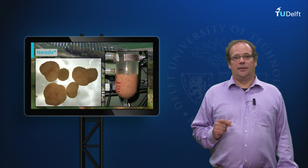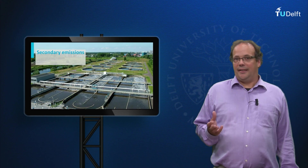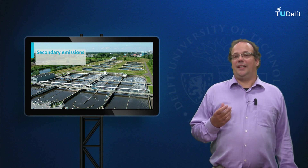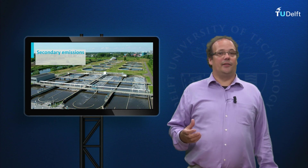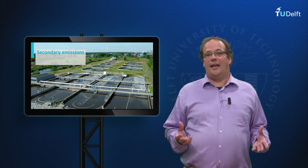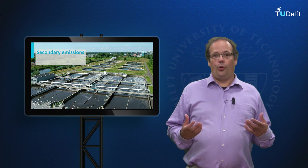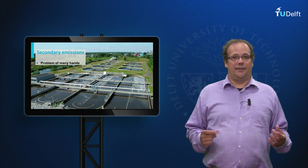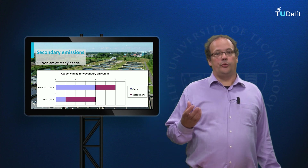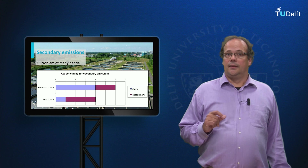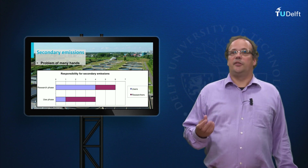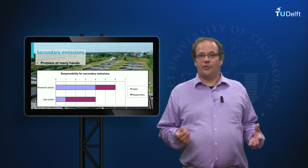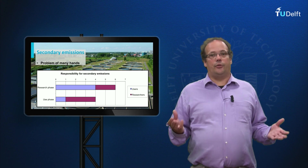In the research that we did, we found that it was not clear in the innovation network who was responsible for what we called secondary emissions — emissions that are not regulated by law but may nevertheless be harmful, such as heavy metals. This was an illustration of what was called in an earlier web lecture the problem of many hands. This graph shows how users attributed the responsibility for secondary emissions to the research phase, while most researchers attributed this responsibility to the use phase — with the danger that nobody would address it. As a result of our findings, the researchers better looked into the secondary emissions, and in the end this turned out not to pose a big problem.